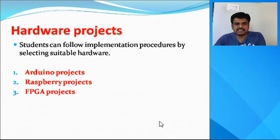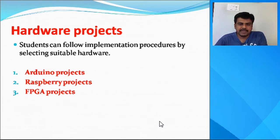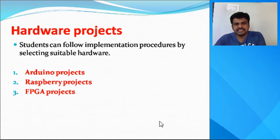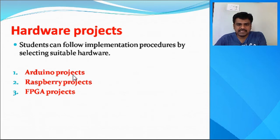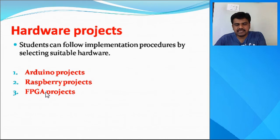The second category is hardware projects. Students can follow implementation procedures by selecting suitable hardware. For example, I have given three types of hardware — there are many, but here are three: one is Arduino kit related projects, second is Raspberry Pi board kit related projects, and third is FPGA kit related projects.